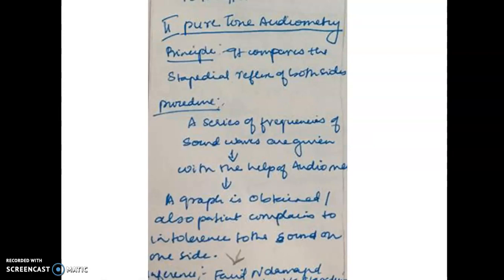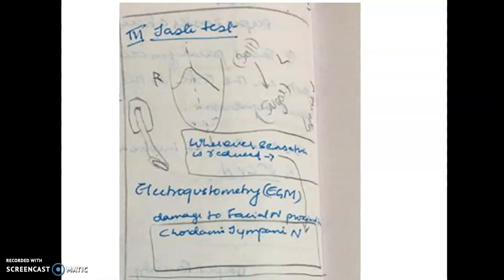Pure tone audiometry compares stapedial reflexes on both sides of the ear using an audiometer to generate a frequency graph. If the facial nerve is damaged proximal to the nerve to stapedius, the graph will be dipped on one side compared to the other. The taste test involves applying solutions of salt, bitter, and sugar via a dropper to the right and left sides of the tongue; reduced taste sensation on one side indicates facial nerve damage proximal to the chorda tympani nerve, which carries taste from the anterior two-thirds of the tongue.